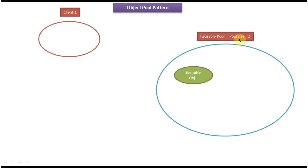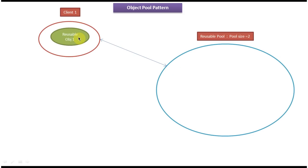Now we will see how this works. Client 1 wants a reusable object to finish some functionality, so client 1 requests a reusable object from the reusable pool. The reusable pool checks whether any usable object is available. Since a reusable object is available, it returns that reusable object to client 1, and client 1 uses it to do some operation.